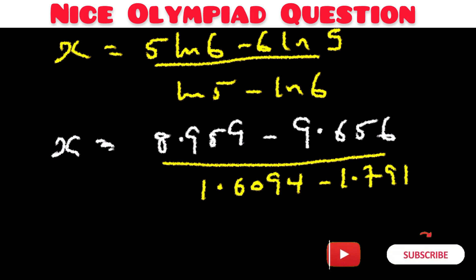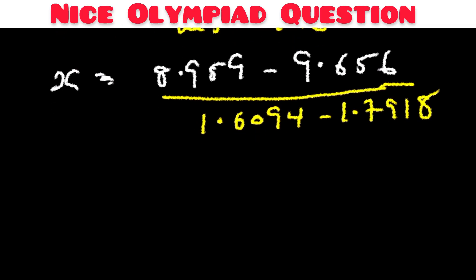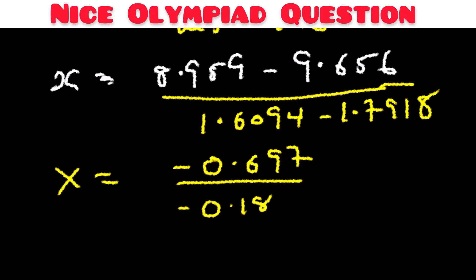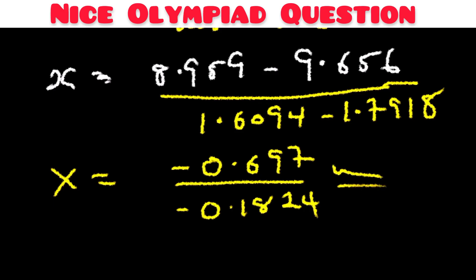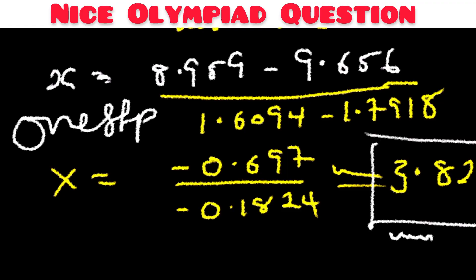Continuing the calculation: ln 5 is approximately 1.6094 and ln 6 is approximately 1.7918. So the denominator is negative 0.1824 and the numerator is negative 0.697. Dividing gives x is approximately 3.82, which is our final answer. If you liked this video, like and subscribe — see you in the next video.